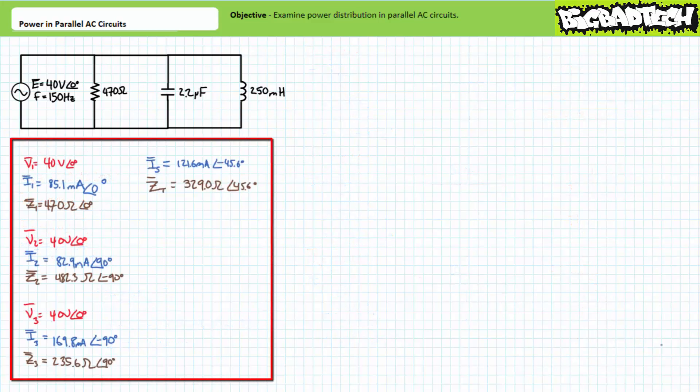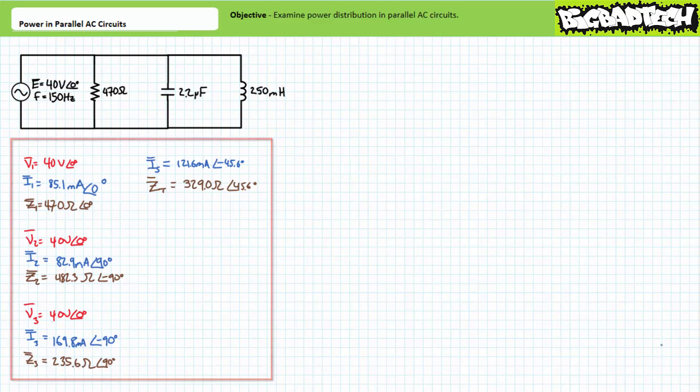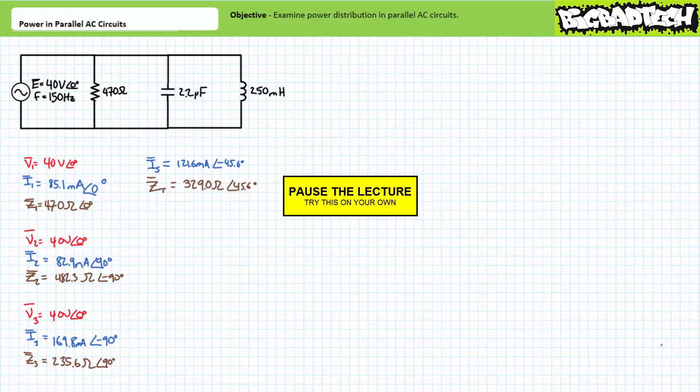Given these voltage and current figures, see if you can calculate the apparent, real, and reactive power for each individual element and the total parallel circuit. Recall, power calculations necessitate the use of relative phase shift between voltage and current. Luckily, voltage across elements in parallel is the same and we're employing source voltage as our reference. This means we really don't have to worry about conversion between absolute and relative phase shift as we did for series circuits, and we're ready for liftoff. By all means, pause the lecture and try this on your own.